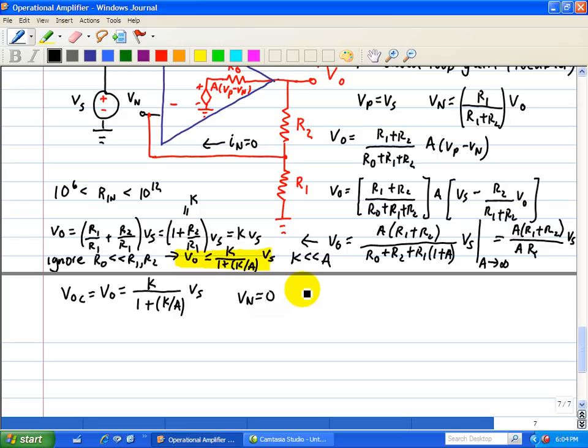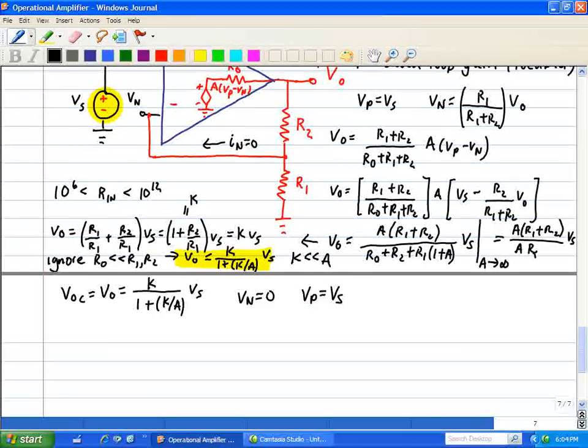Now that leaves our input voltage VP minus VN just to equal VP. So VP is equal to VS since VP is connected to VS.